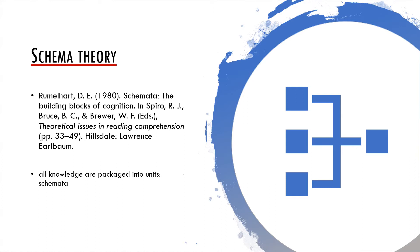A classic example of a schema would be the restaurant script. We all have the knowledge of how to behave in a restaurant. When we enter, we may expect to be seated, we expect the waiter to come and bring the menus, the waiter may ask us whether we would like something to drink, then we order drinks and the waiter leaves. The waiter comes again, probably already with the drinks, and asks us what we would like to eat, and so on. This has consequences both for our behavior in general and for our linguistic behavior.